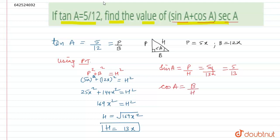Now similarly, we can calculate the value of cos A, that is equal to base upon hypotenuse. So base value is 12x and hypotenuse is 13x. x will be cancelled out, what remains is 12 by 13.